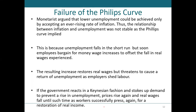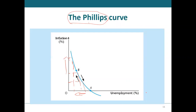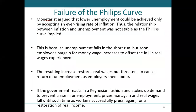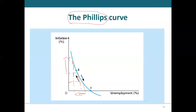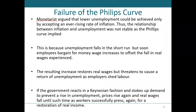But it got to a point when economists realized that that policy by government was not working — it was actually leading to more unemployment. The monetarist economists began to question this curve, which was propounded by the Keynesian economists.